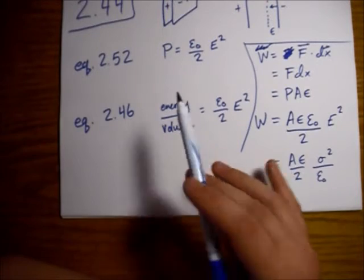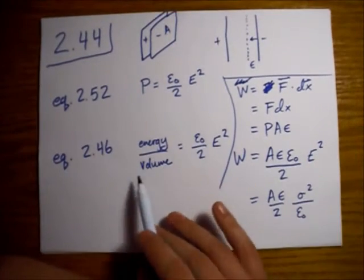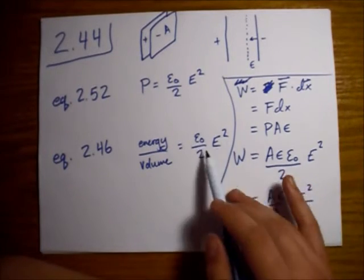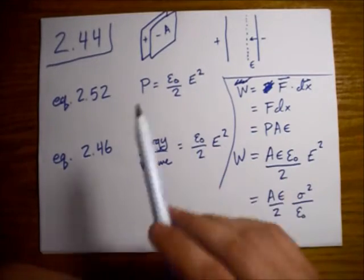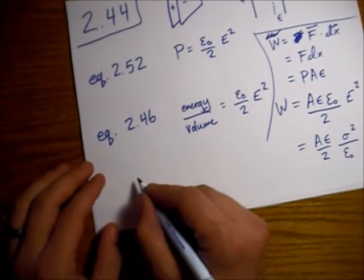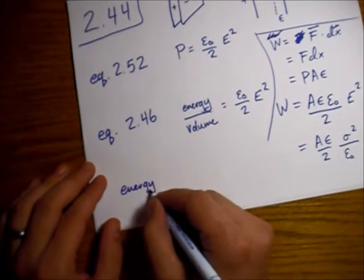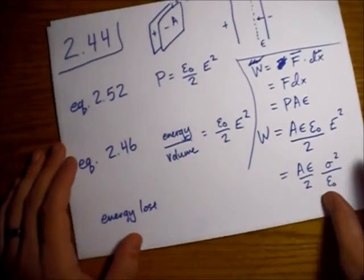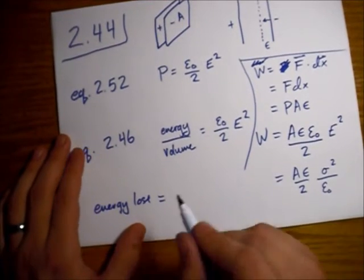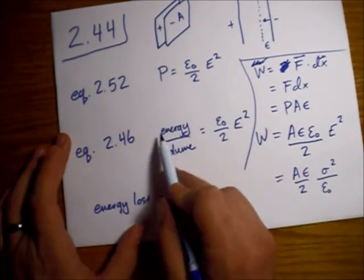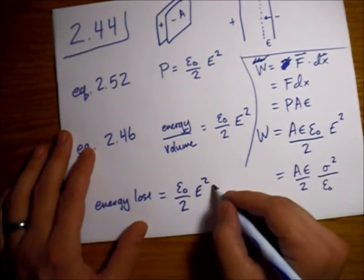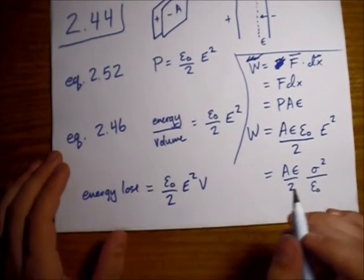Now let's look at the energy lost by the fields. So the energy density for these electrostatic fields is given by this equation right here, which looks suspiciously similar to this pressure. So to find the total energy lost, we are going to just multiply the energy density by the volume. So let me write out the energy density from this equation, and now we'll multiply it by the volume. This is a volume, not a voltage.